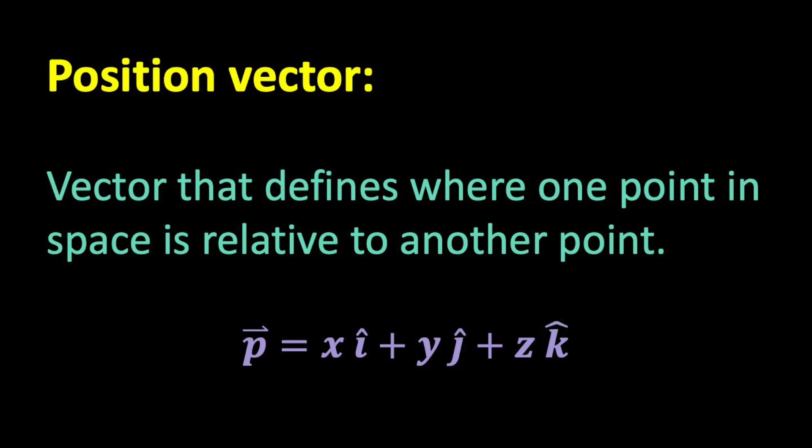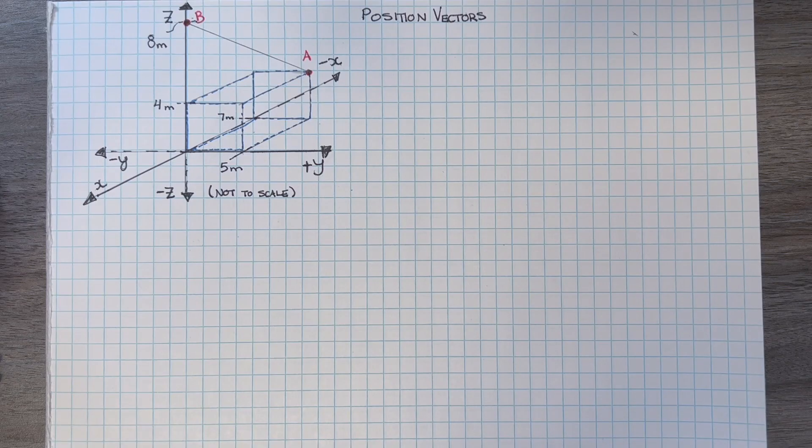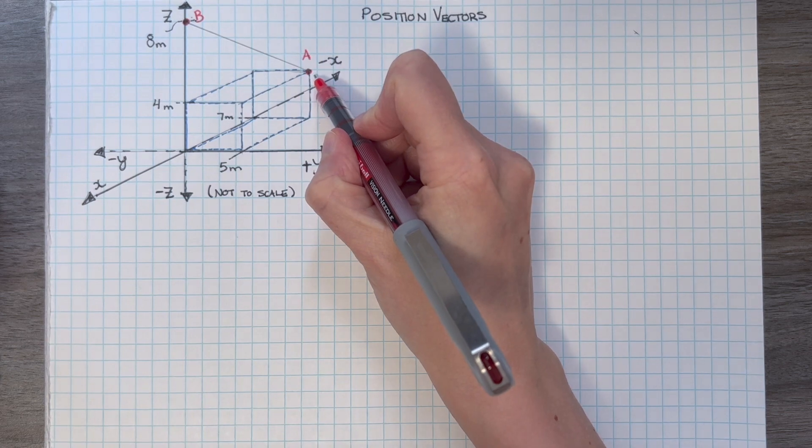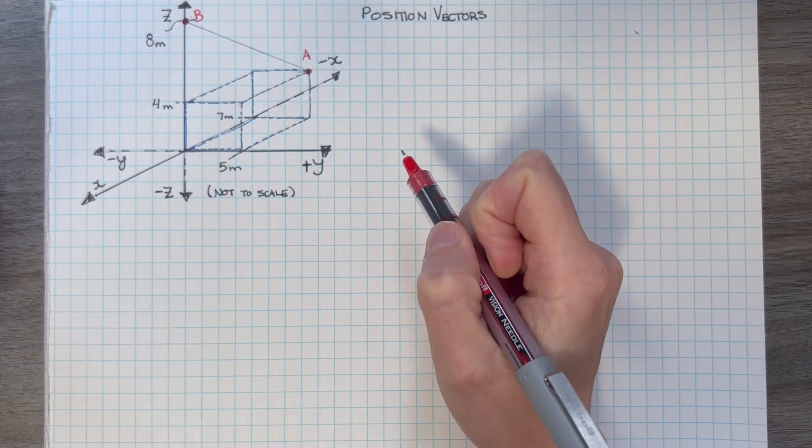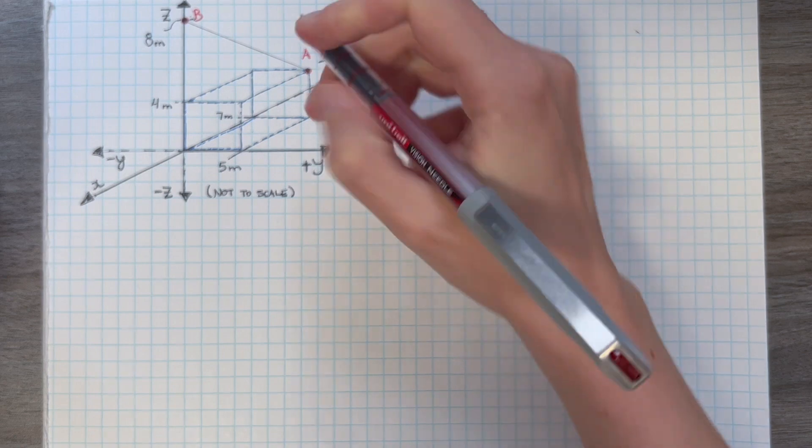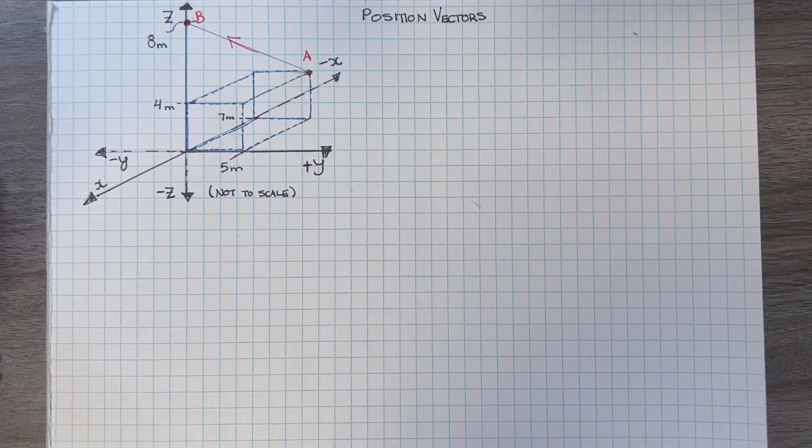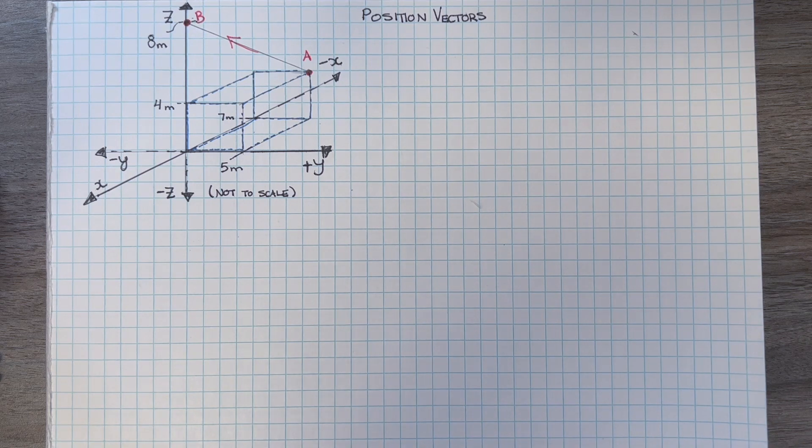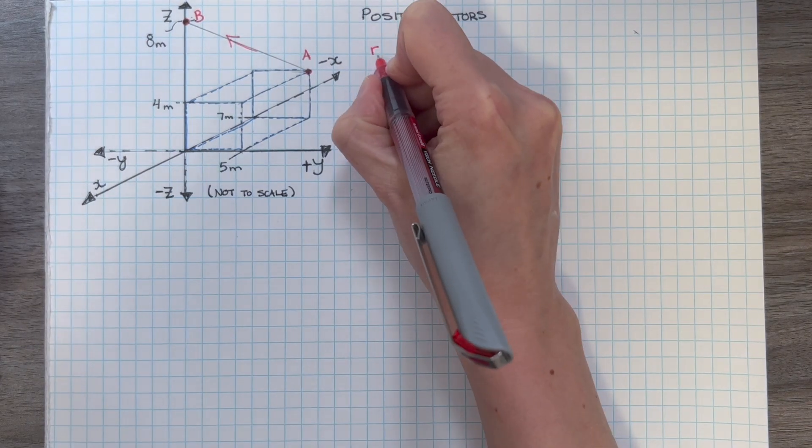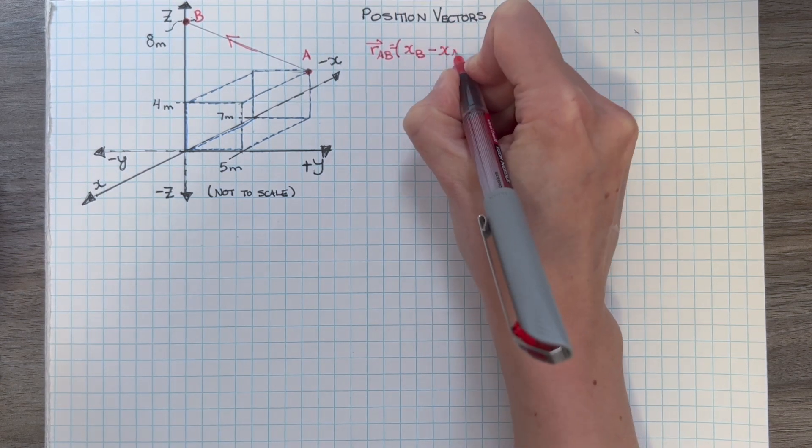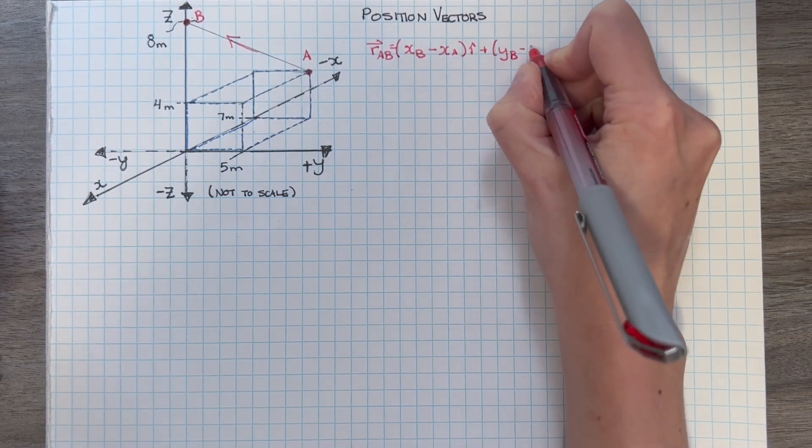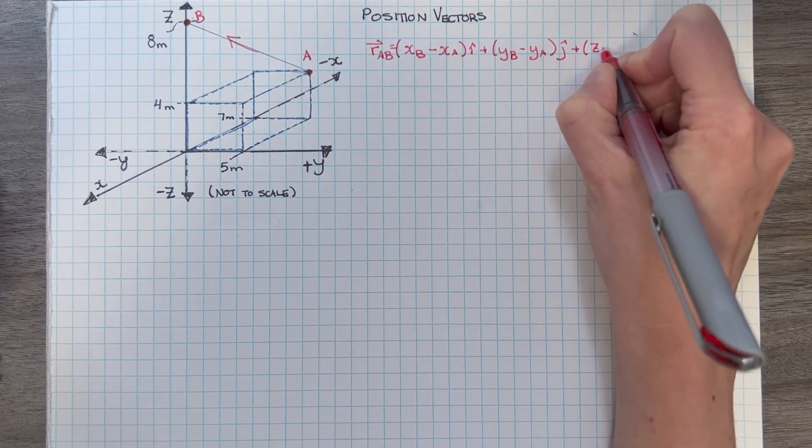Let's start by learning about position vectors. They are Cartesian vectors that locate where one point in space is relative to another point. We have points A and B and we want to describe where they are relative to each other. First, we identify the sense, i.e. if we're going from A to B or from B to A. Let's say we're going from A to B.